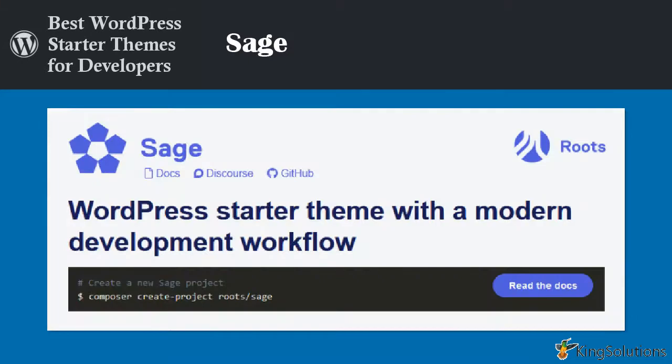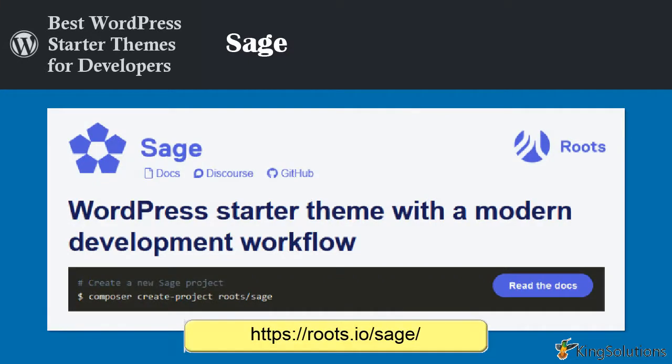Sage, formerly Roots, is a modern WordPress starter theme with a modern development workflow based on Gulp, Bootstrap, and Bower. It uses a theme wrapper that helps you avoid repeating the same code in every template. Sage also uses Laravel's Blade templating engine. You will need an understanding of Linux to use Sage, as all commands must run in Linux or a Windows Subsystem for Linux. Sage has a very strong following among WordPress front-end developers.